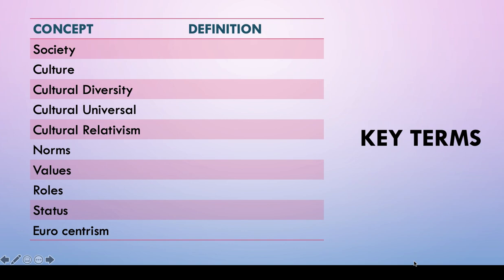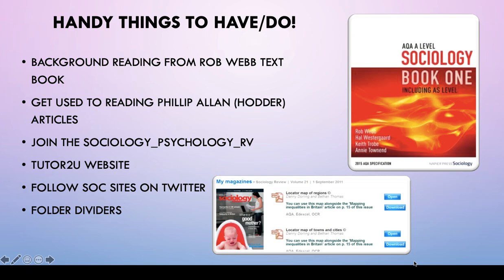As sociologists, you need to understand that these concepts are and could be causes for why we have turned out the way we have. Just some handy things for you to have. This is a book I found useful — I've got other books I'd be happy to share. There are magazines and publications out there — JSTOR is great for academic reading. For background reading, Rob Webb textbooks are good — get used to reading Philip Allan Hodder articles. Join the sociology and psychology Instagram page. True2You website is quite good as it goes through exam questions and how to answer them. Follow sociology websites on Twitter. You'll need folder dividers.